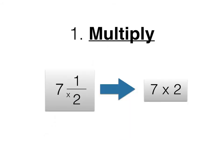The first step is to multiply. Given a mixed number, multiply the denominator by the whole number. For example, if 7 is our whole number and 2 is our denominator, we would multiply them together to get a product of 14.